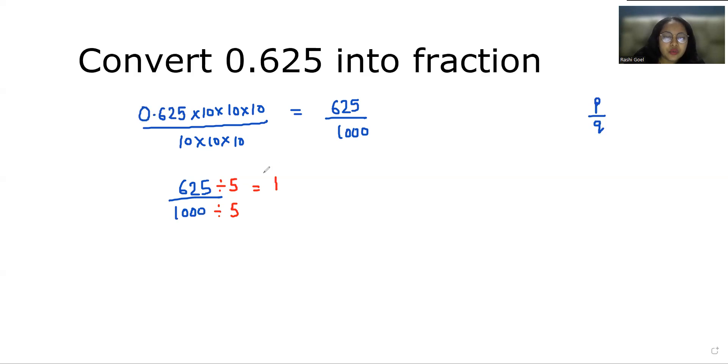The denominator 1000 divided by 5 is 200, giving us 125 by 200. The numerator still ends with 5, so it's divisible by 5. We'll divide both numerator and denominator again. 125 divided by 5 is 25.